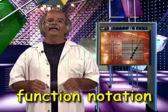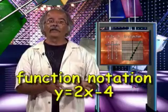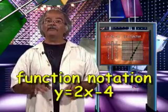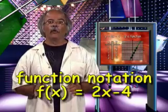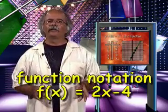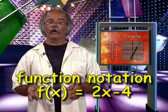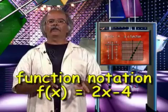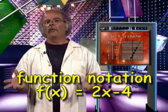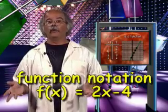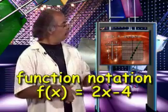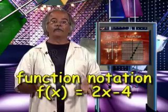Most linear equations will give us a line that represents a function, so we can write them in a slightly different form called function notation. Instead of writing y equals 2x minus 4, we express it as f of x equals 2x minus 4. The x still represents the members of the domain, but now f of x represents the members of the range. So f of x equals 2x minus 4 is just another way of expressing the equation y equals 2x minus 4.